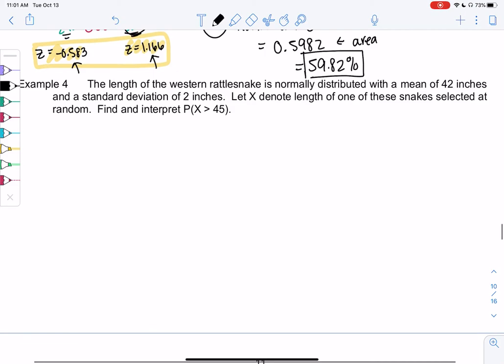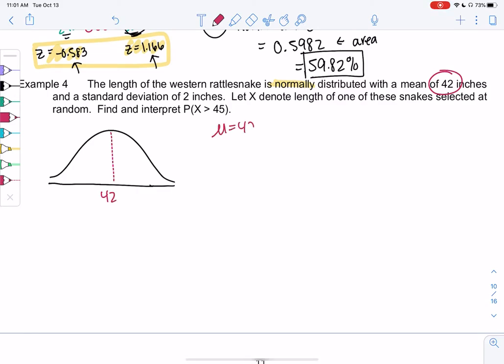We're going to look at those rattlesnakes again. They're normally distributed, so I'm going to immediately draw that curve. I swear drawing the curve makes a difference every time. We'll put 42 in the middle for a mean of 42. So mu is 42 and a standard deviation of 2. And x will be the length of a rattlesnake selected at random. What's the probability that x is greater than 45?